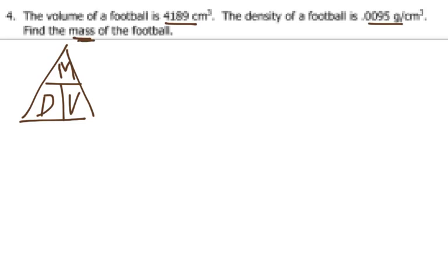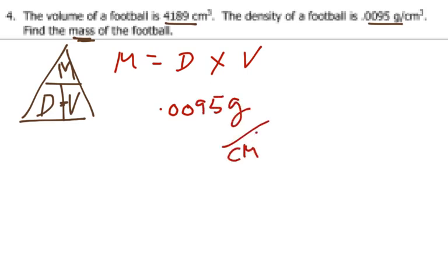And always practice writing up everything. Write up the letters first and then plug your values in. The density given to us is 0.0095 grams per centimeters cubed. And the volume that they gave us was 4189 centimeters cubed.